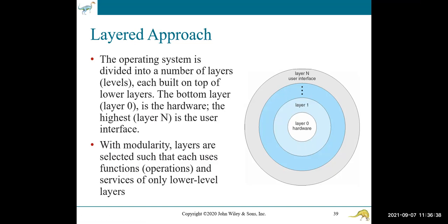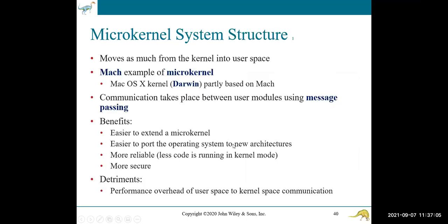There's a modularity — you can bundle concepts and privileges together. At layer zero or ring zero, we find mechanisms, not policies. Think of the word machine and mechanism — kind of similar. Microkernel.